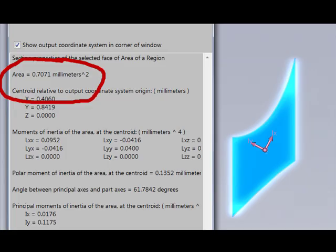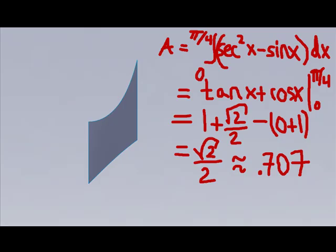Let's take a closer look at the value of area. SOLIDWORKS calculated 0.7071 mm² out to four decimal places. In engineering class, you are constantly comparing a graphical solution or an approximate numerical solution with an analytical solution.